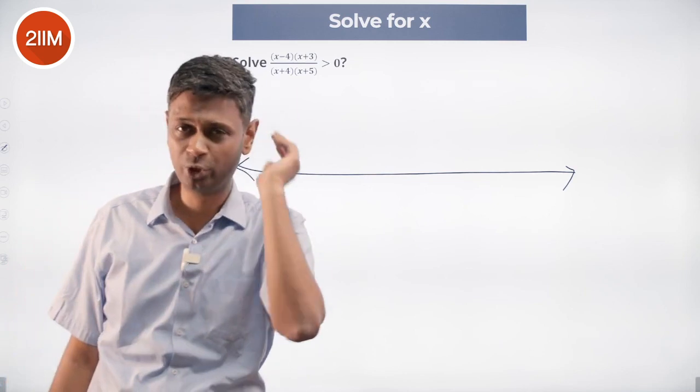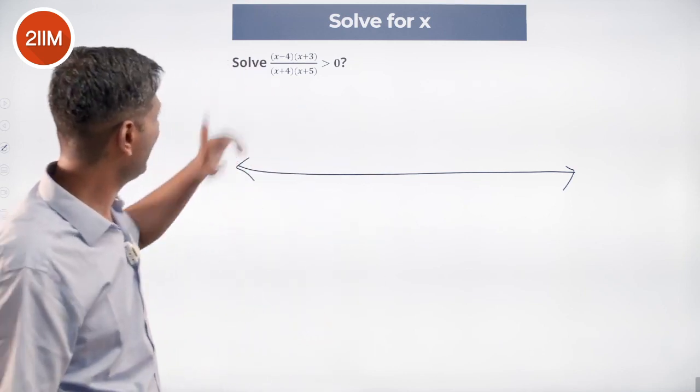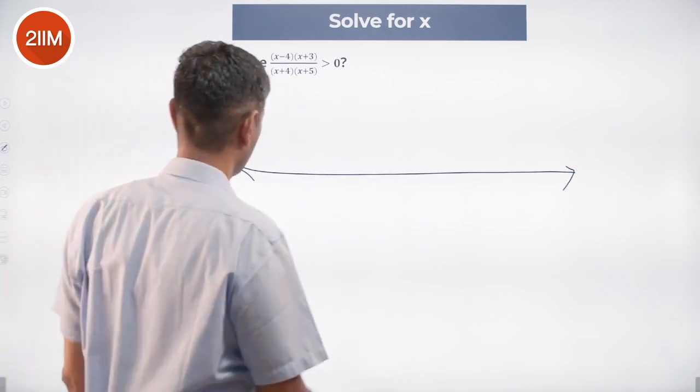When does zero happen? Numerator and denominator. My turning points are going to be x equal to 4, minus 3, minus 5, minus 4.